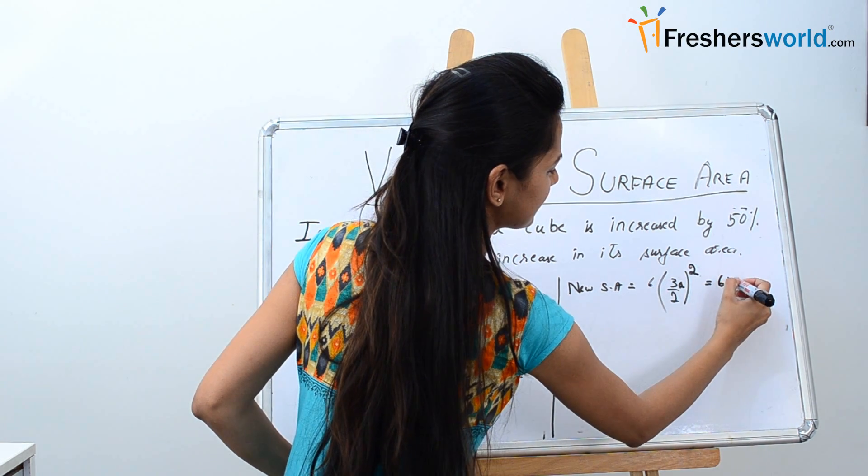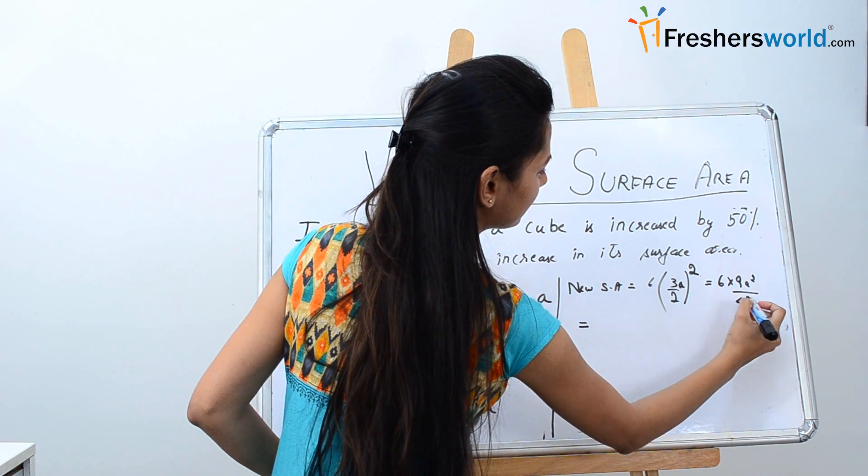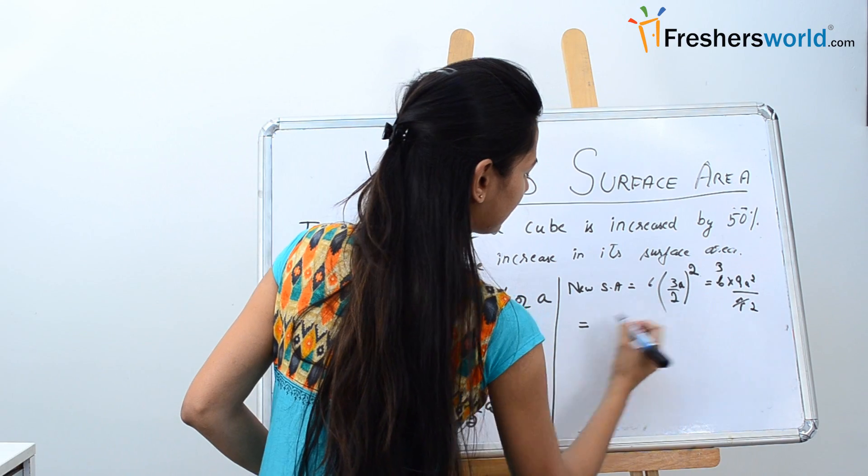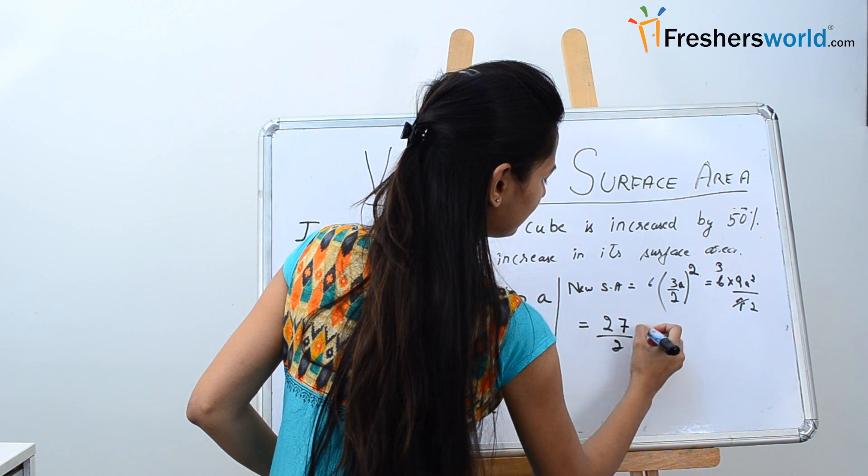So that would be 6 into 9 a squared by 4. That is equal to 27 by 2 a squared.